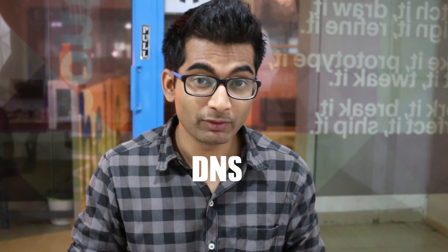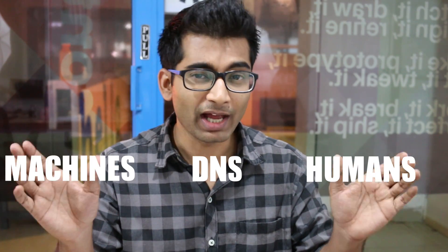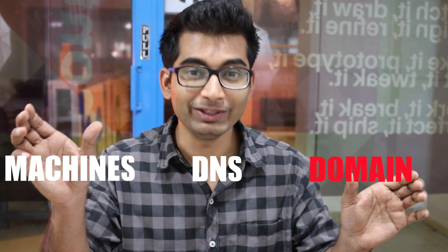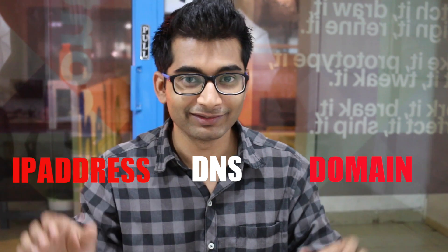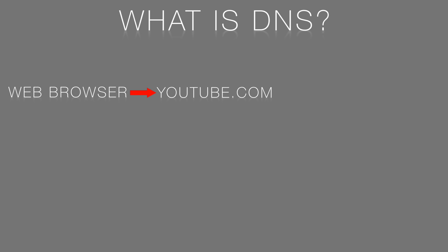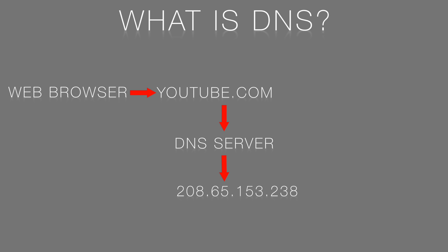What DNS does is it sits between you and the machine and translates the domain name into the relevant IP address. Think of it like a phone book. When you type YouTube.com from your computer, the query first goes to the DNS server, which translates it into the IP address, and after that it goes to the web server. Every request you make first goes to your DNS server and then to the web server.